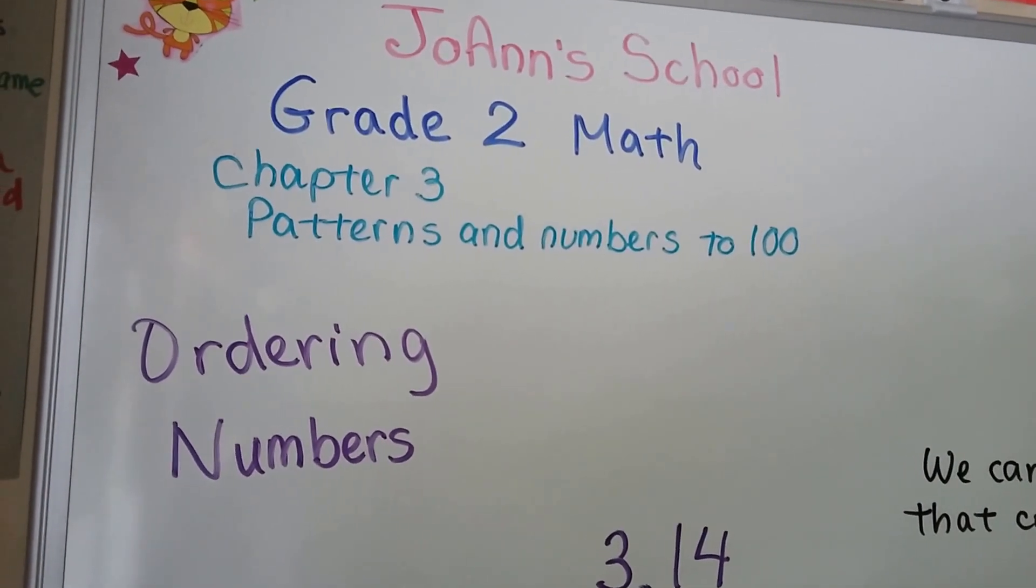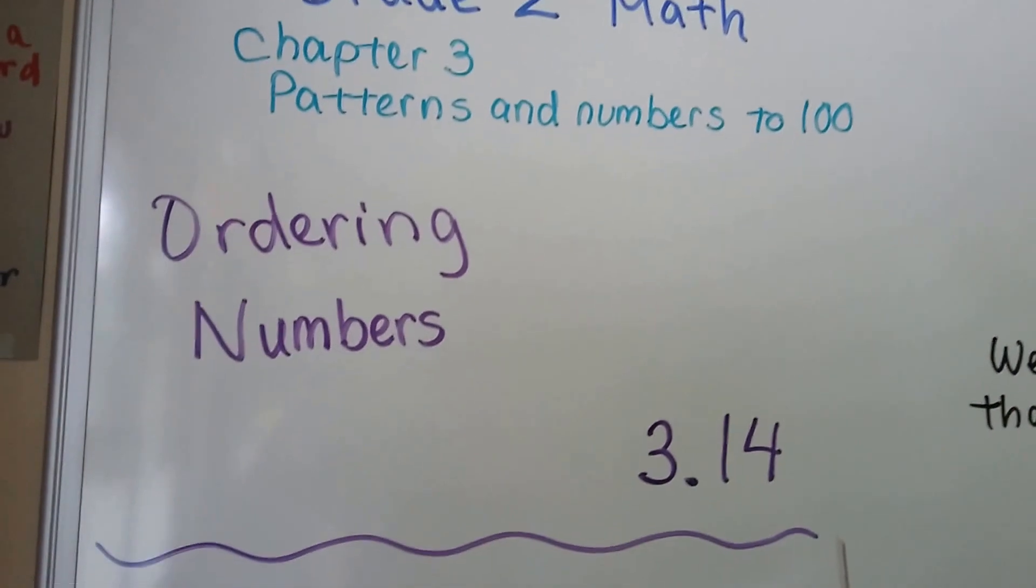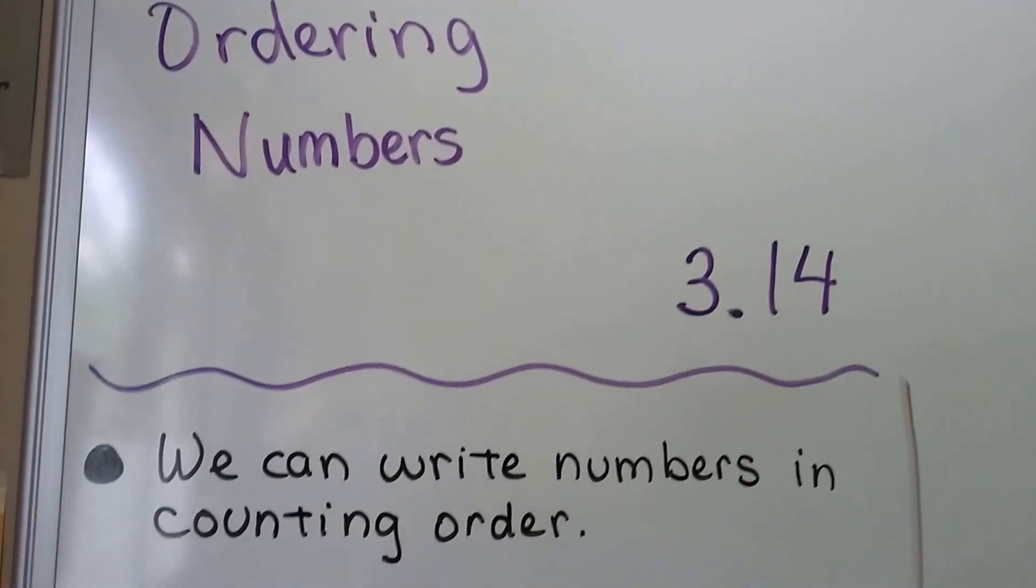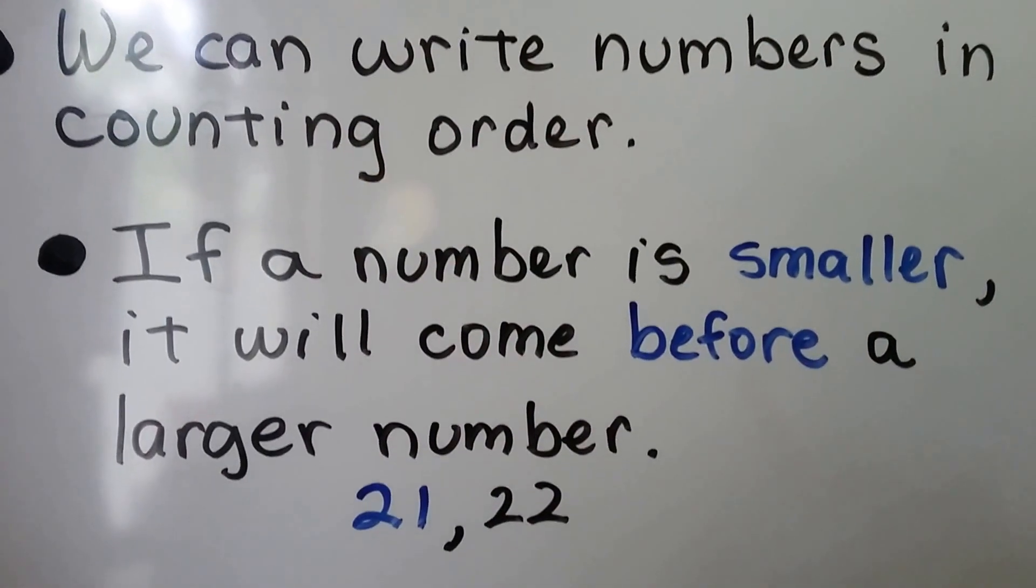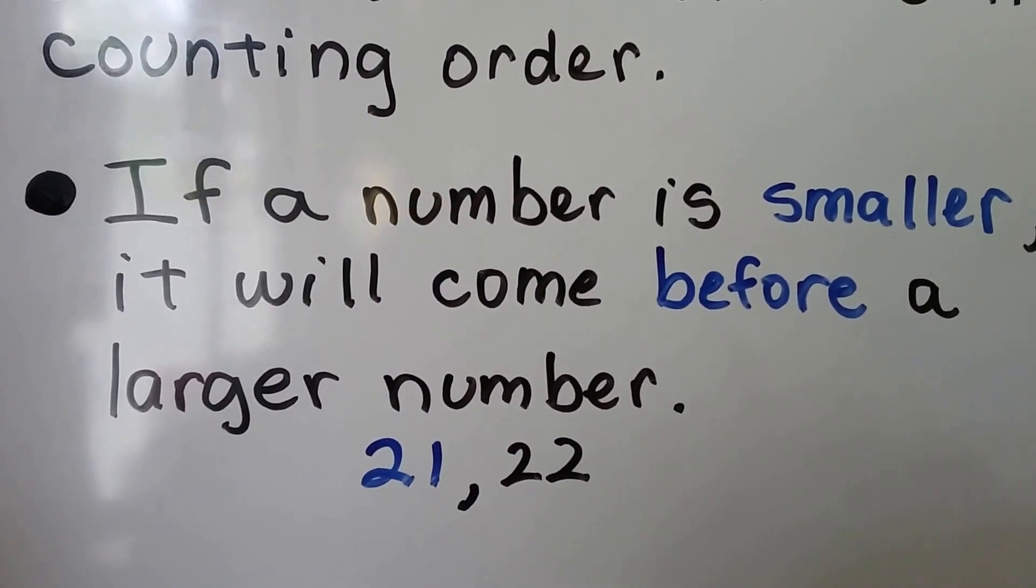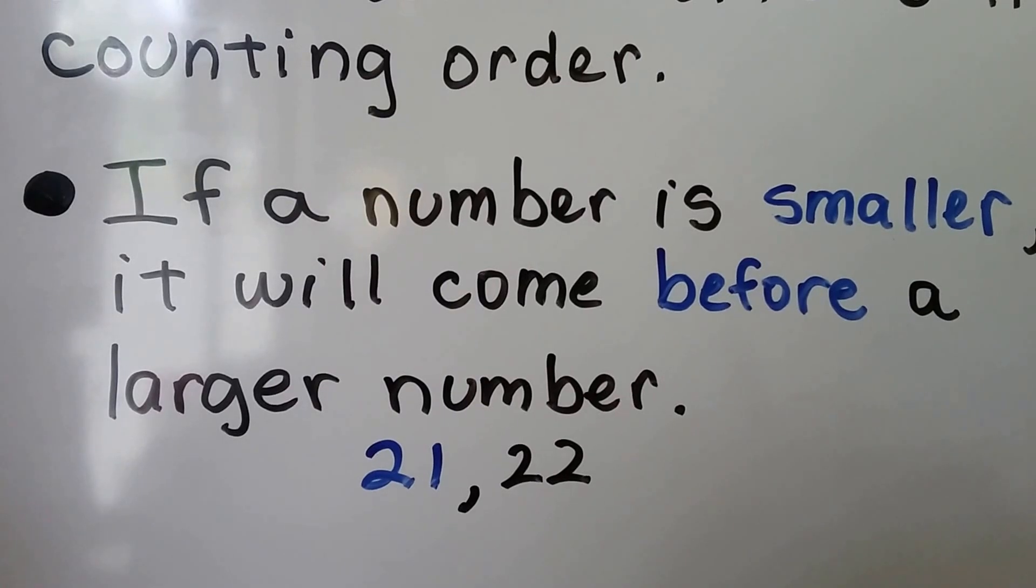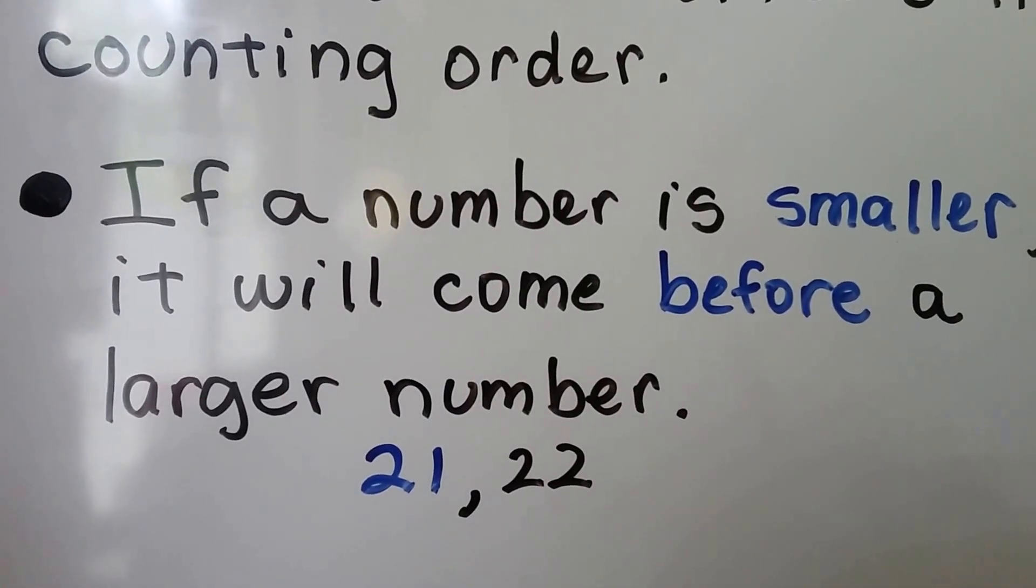Ordering numbers, lesson 3.14. We can write numbers in counting order. If a number is smaller, it will come before a larger number. 21 is smaller than 22, it comes before 22.